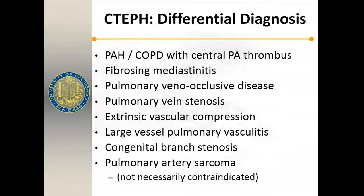In the differential diagnosis, we must consider primary pulmonary arterial hypertension, COPD, fibrosing mediastinitis, pulmonary venous occlusive disease — more commonly seen after EP procedures for pulmonary vein isolation — pulmonary vein stenosis, congenital or extrinsic vascular compression, sarcoidosis compressing large lymph nodes around pulmonary arteries, large vessel vasculitis, congenital branch stenosis, and pulmonary artery sarcoma, which can mimic chronic thromboembolic disease very well. We perform endarterectomy for sarcoma patients as well.